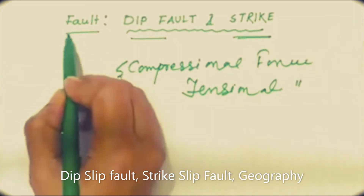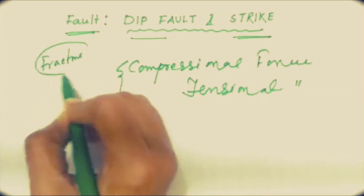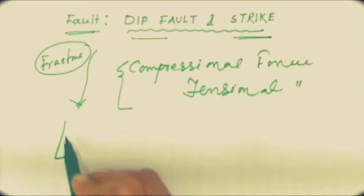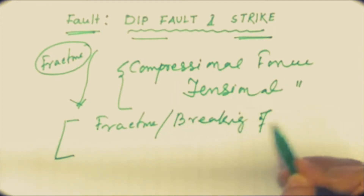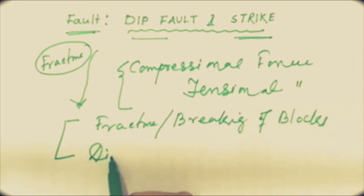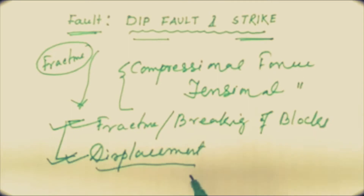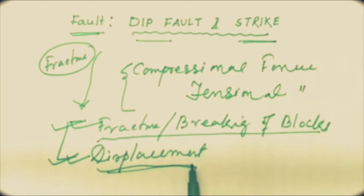A fault is a fracture zone between two blocks. Fracture is related to the breaking of the blocks and the displacement. So faulting is always related to two factors: first is the fracture or breaking of the blocks, and second is the displacement. The nature and amount of displacement depends upon the strength of the fault.